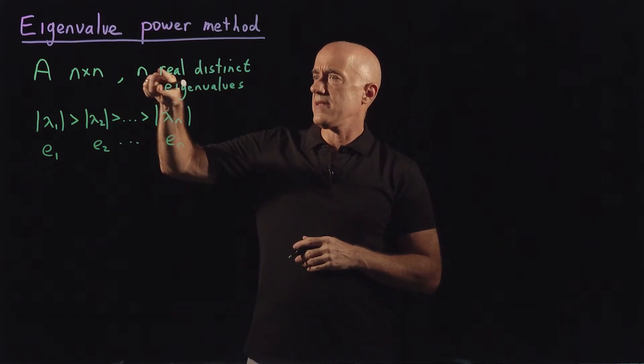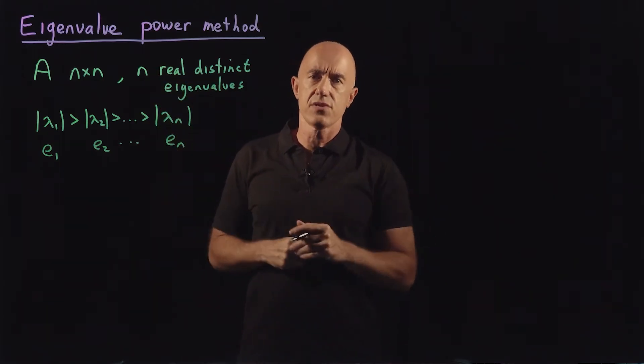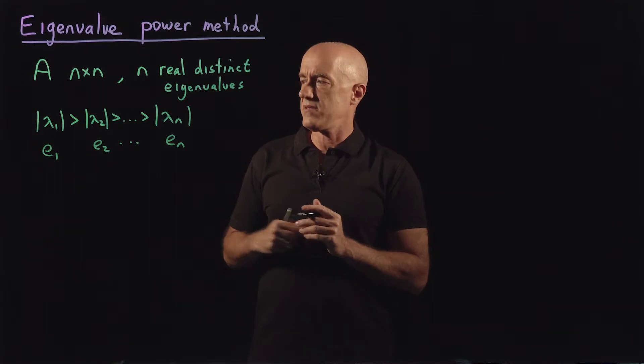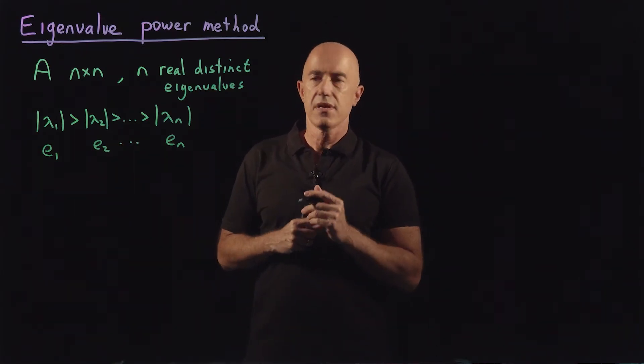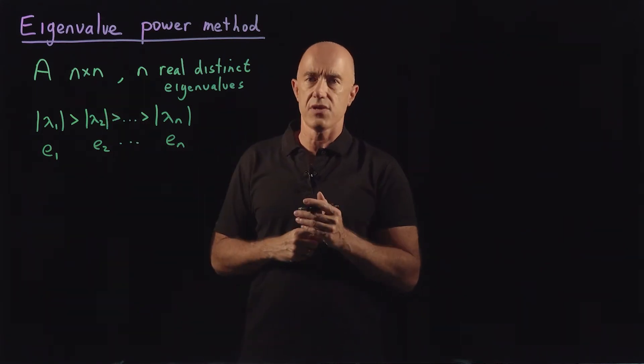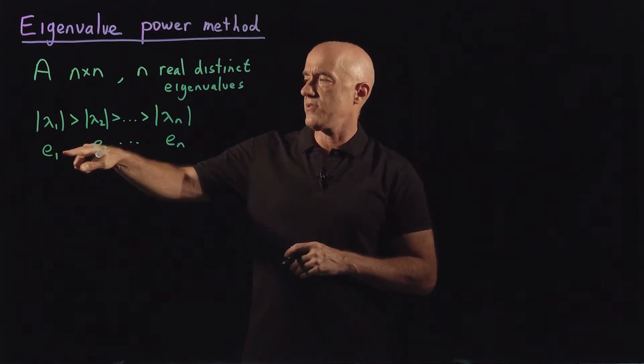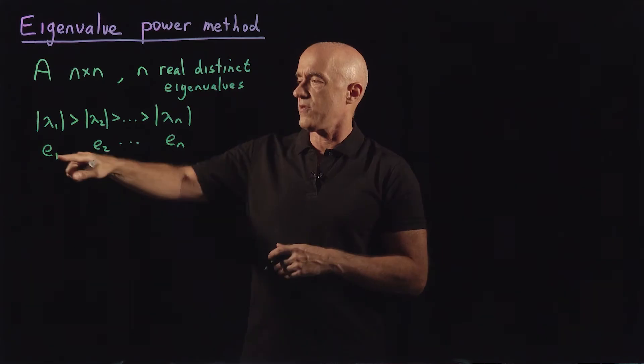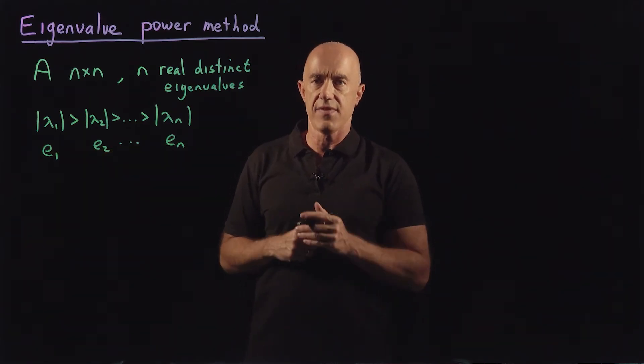And each of these eigenvalues also has an associated eigenvector. So we have, we'll call those e. So e one, e two, through e n. Okay, for n distinct eigenvalues, the eigenvectors are linearly independent. So any column vector, n by one column vector, can be written in terms of a linear combination of the n eigenvectors.